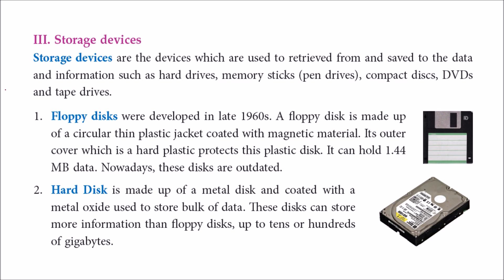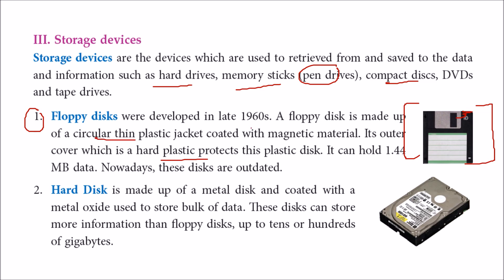Storage devices are used to retrieve and save data and information, such as hard drives, memory sticks like pen drives, CDs, DVDs, and tape drives. Floppy disks were developed in 1966. The outer casing is hard plastic protecting an inner circular thin plastic disk coated with magnetic material. Even today an MP3 song is around 3 to 5 MB, but floppy disks had a capacity of only 1.44 MB. These disks are now outdated.